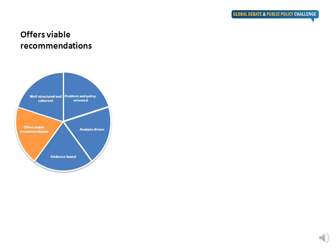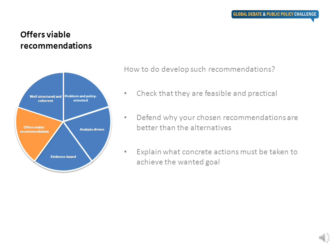Your memo should offer viable recommendations. Broadly speaking, the goal of a policy memo is threefold: highlight the problem, analyze the current state of affairs, and argue for a specific course of action. In terms of developing recommendations, check that they are feasible and practical, defend why your chosen recommendations are better than the alternative, and explain what concrete actions must be taken to achieve the wanted goal.